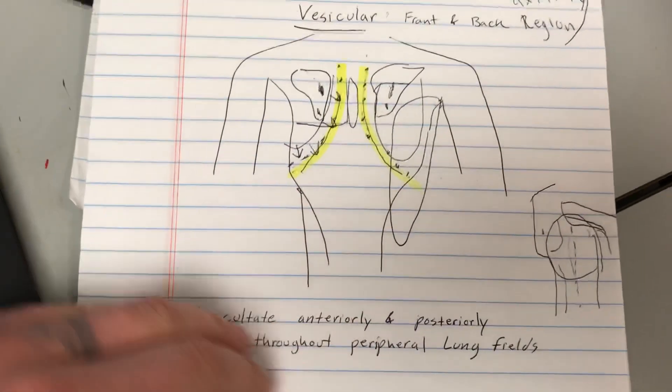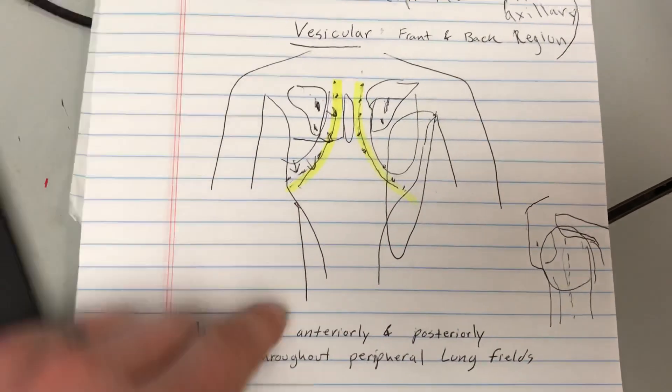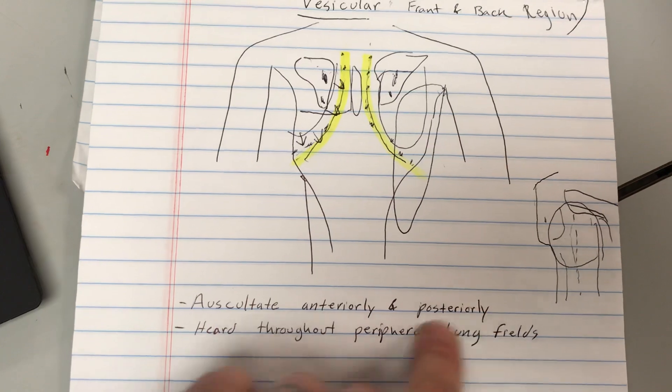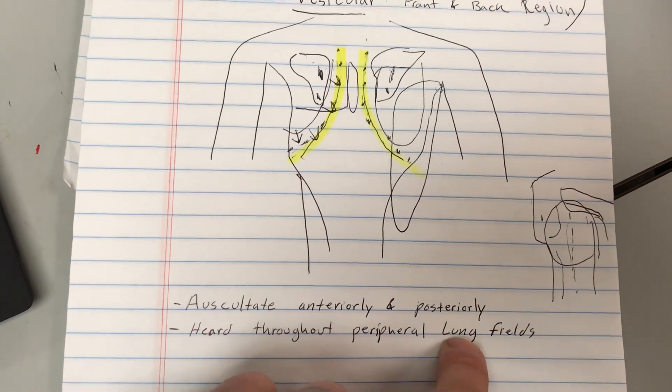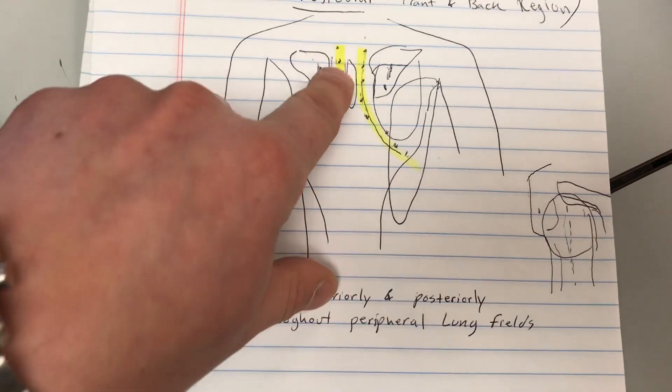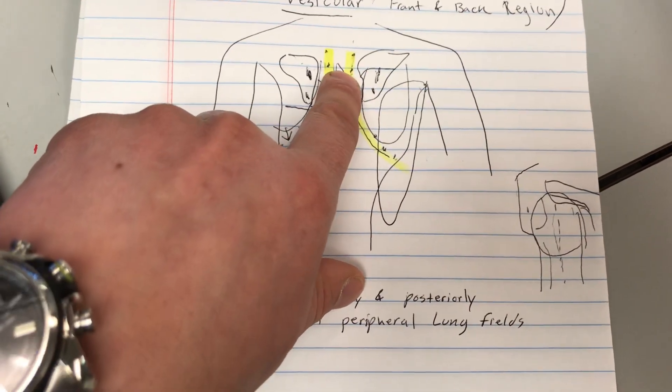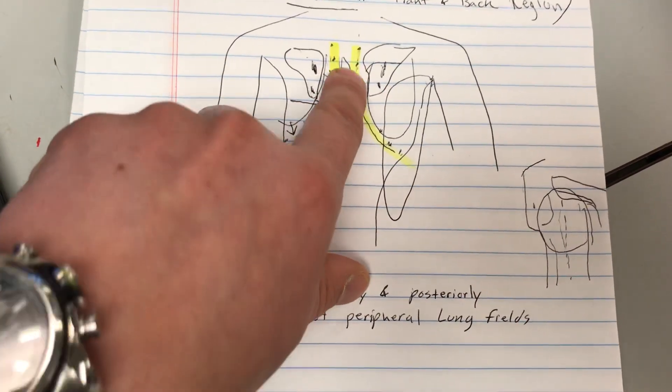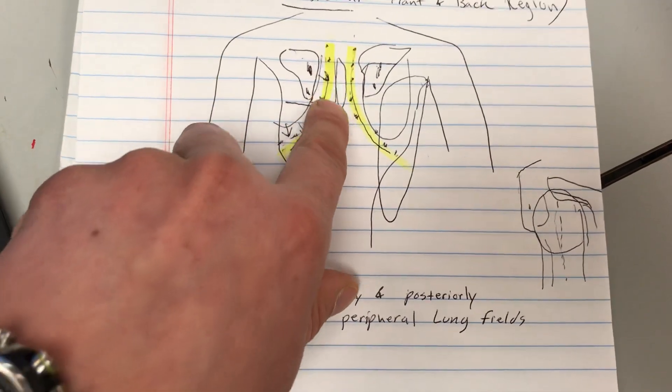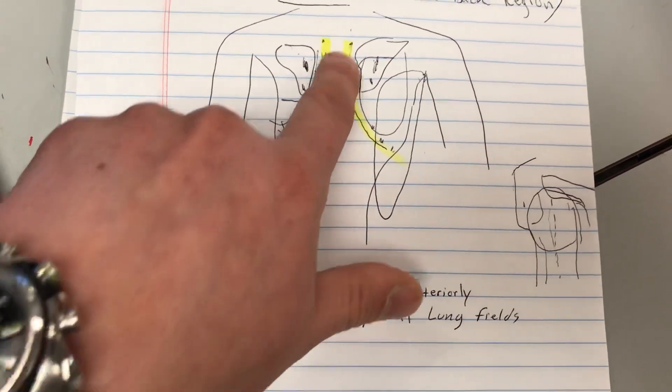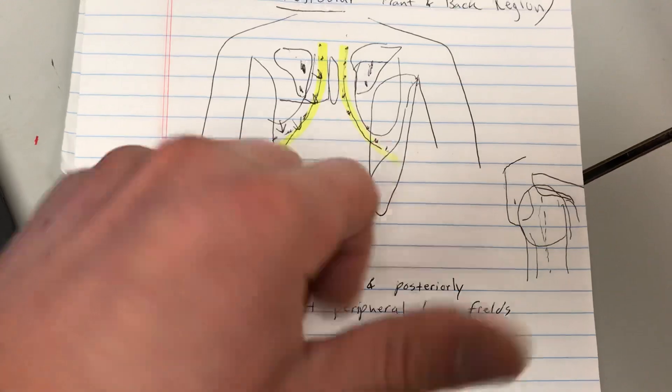Again, I just went over the location of where you auscultate anteriorly and posteriorly, heard throughout peripheral of lung's fields. Like I said, just a little U-shape between the shoulder blades if you're on the back, if you're on the front of the chest, just go down the side of the sternum and just keep going with the chest anatomy. Alright, that's it.